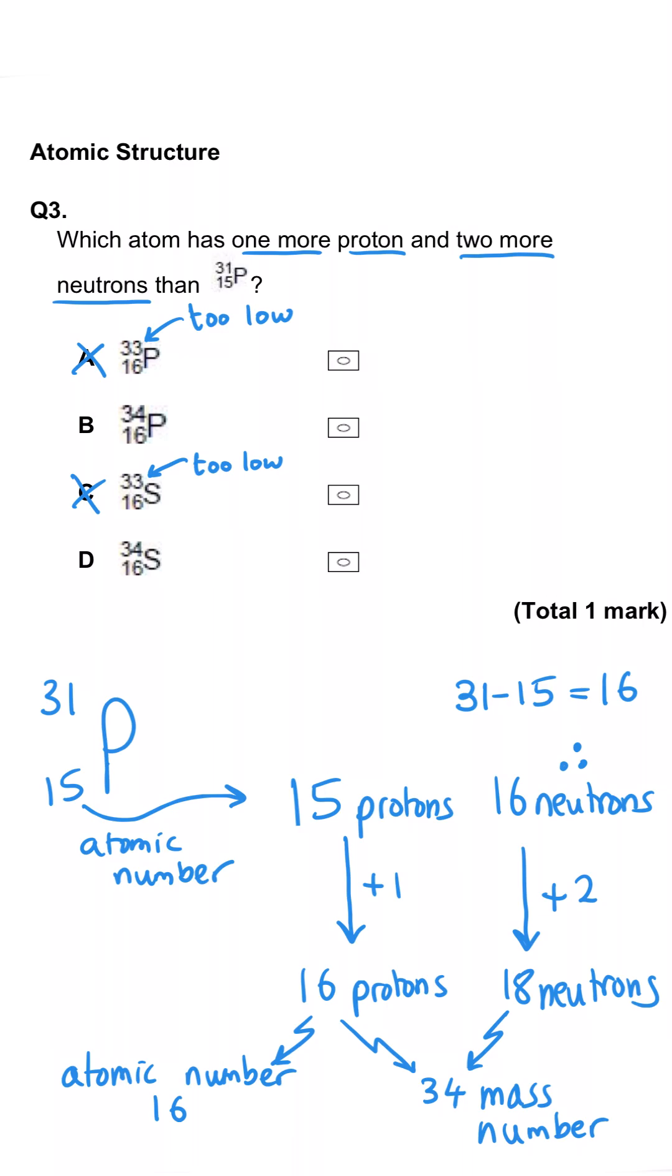So we can rule out A and C because their mass numbers are too low. To pick between B and D, we need to look at the atomic number of 16. Well if 15 as an atomic number is phosphorus, 16 must be a totally new element. So B is wrong and D is the correct answer.